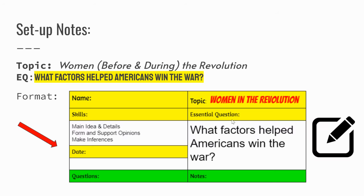We took some time to set up our notes. You may want to pause this and type this into your two-column notes, which you can find over in Google Classroom. Make sure you make a copy of them before you get started. You know that one of the factors that helped Americans win the war was women working during and before the revolution.